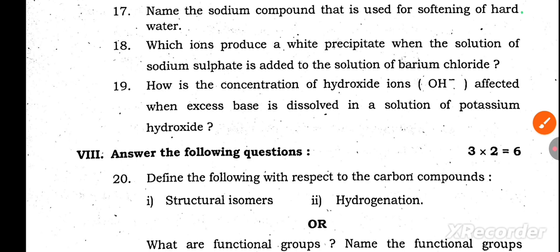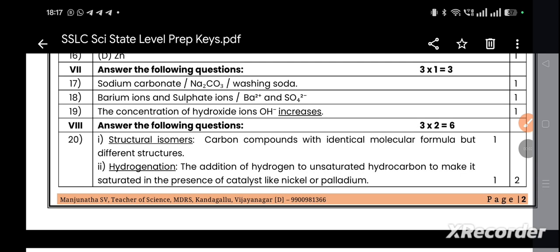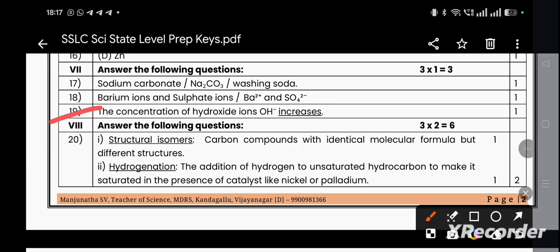Question number 19: How is the concentration of hydroxide ions affected when excess base is dissolved in a solution of potassium hydroxide? If excess base is dissolved in the solution, the concentration of hydroxide ions increases.